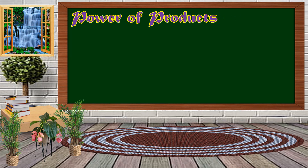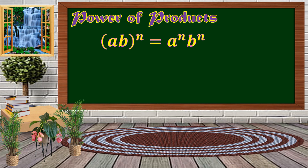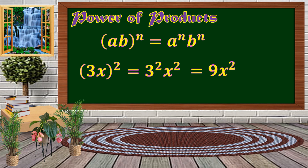Next, we have Power of Products. We distribute the exponent to each variable or coefficient. For example, the quantity 3x raised to 2 — distribute the exponent: 3 raised to 2 times x raised to 2. Simplifying, 3 times 3 is 9, giving us 9x squared. That is the Power of Products.